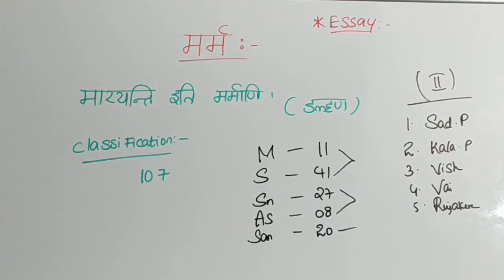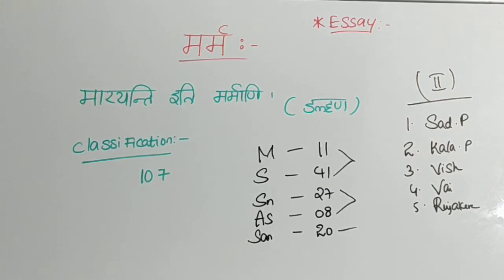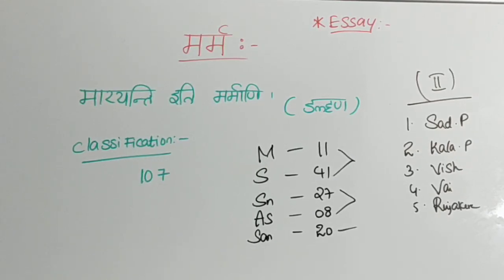Classification based on effect of injury. There are again five types of classifications based on the effect of injury: Sadya Pranahara Marma, Kalanthara Pranahara Marma, Vishalyagna Marma, Vaikalyakara Marma, and Rujakara Marma. Based on the name itself, Sadya Pranahara means that which causes immediate death, and Kalanthara Pranahara is that which causes death after a period of time.